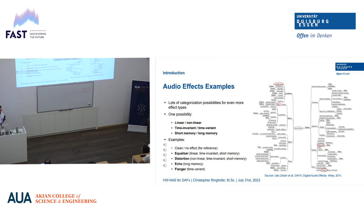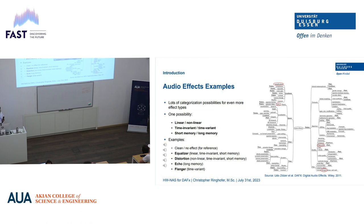With the equalizer, you can at least hear the spectrum becomes different — a bit more bass, a bit more treble — which is a linear, time-invariant, short memory effect. Now let's listen to distortion, which should be significantly louder. Then echo — you can't really hear the repetitions clearly but it adds an echo. And flanger, which is a time-variant effect — you might hear the swooshing in there.